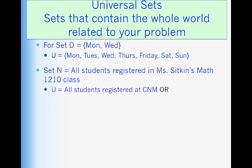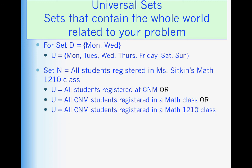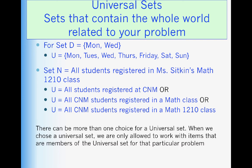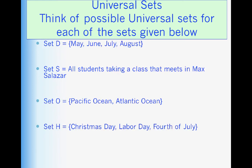Set N. All students registered in Ms. Sitkin's Math 1210 class. Well, there's a number of possibilities. Universal set could be all the students registered at CNM. All the CNM students registered in a math class. All CNM students registered in a math 1210 math class. There can be more than one choice for universal sets. Take a moment now and see if you can define universal sets for these. Now, here's what I've got. And again, you may have come up with different descriptions.